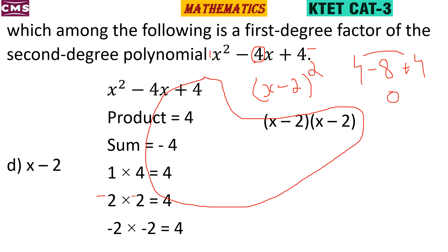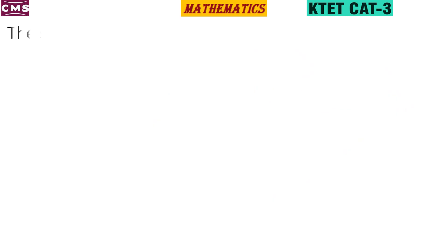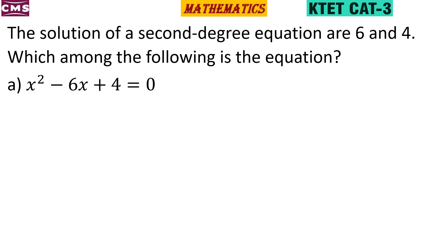So (x - 2) is the correct factor. When x equals 2, the equation holds. The next question: the solutions of a second degree equation are 6 and 4. Which among the following is the equation?